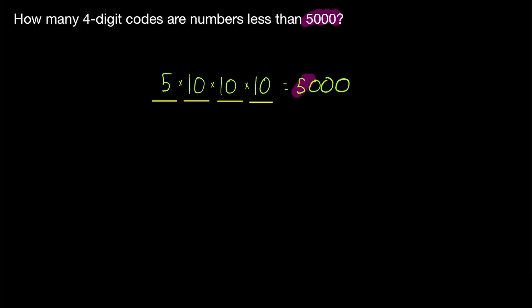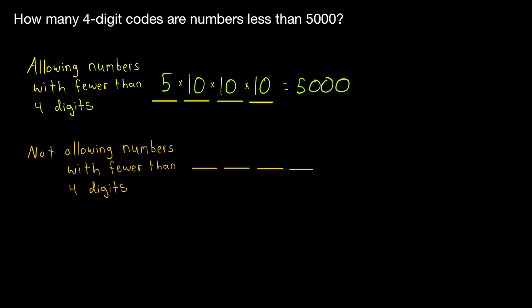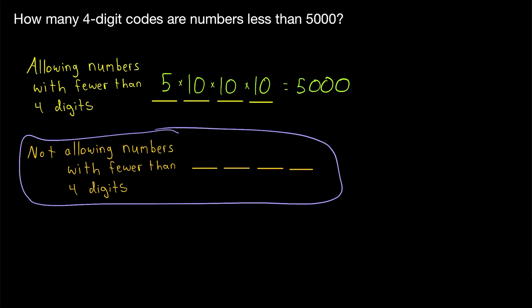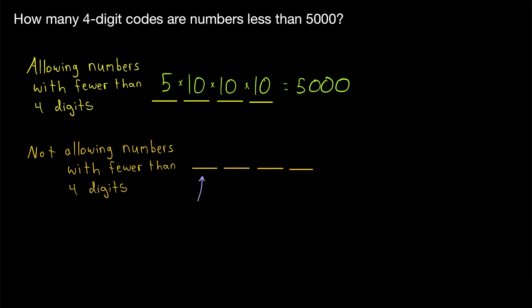Seeing that answer might suggest to you a much simpler way of solving this problem, which we'll get to in just a minute. But first, let's suppose we're trying to count four-digit codes that represent four-digit numbers less than 5,000. So now we're not going to allow something like 0, 3, 4, 5 — because even though it's a four-digit code, it represents a three-digit number. So here was our answer when we were allowing numbers with fewer than four digits. Now how many choices do we have for our first digit?